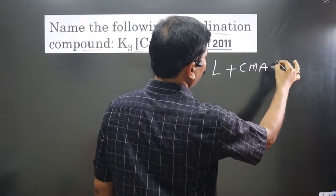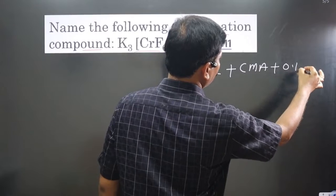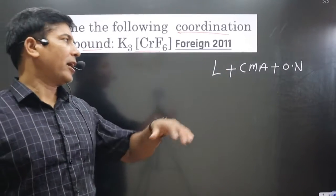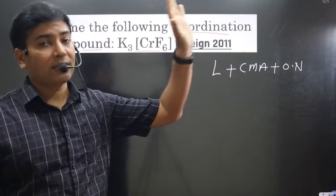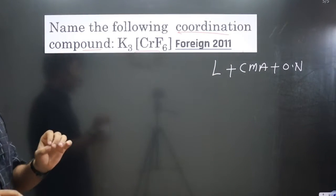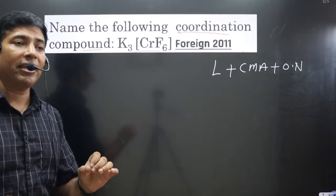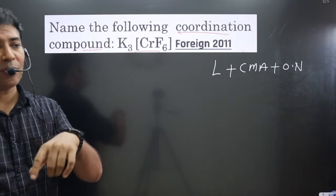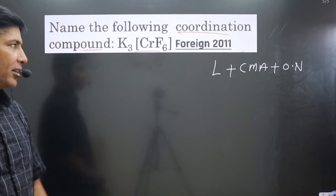The counter ion can be in the front or in the last position. The second point to keep in mind: always identify if the central metal atom is present in the cationic complex or anionic complex before writing the name.